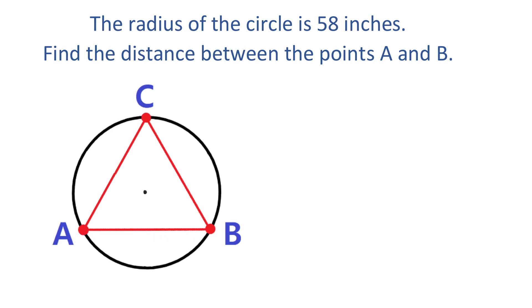Let's start by connecting the center of the circle with each of these points. Then each of these line segments represents the radius and has the length of 58 inches. Now let's use the letter O to represent the center. Because one full rotation represents 360 degrees, each of these three angles is 120 degrees.